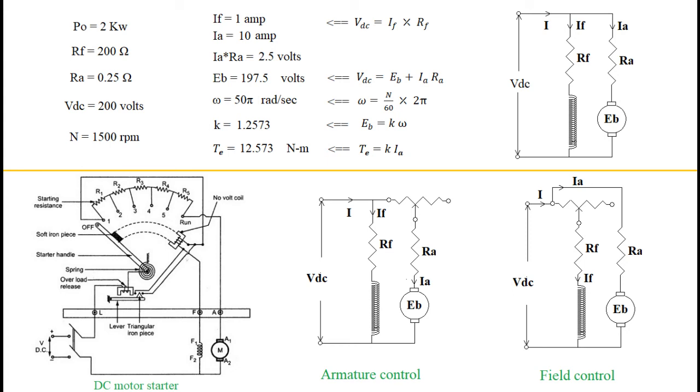As we include more resistance in the armature circuit, speed drops from its rated value. Since this control reduces both torque and speed, motor output is automatically reduced. Thus, speed reduction implies reduction in overall motor output from 2 kW to some lower value.